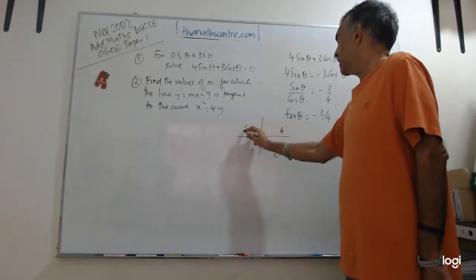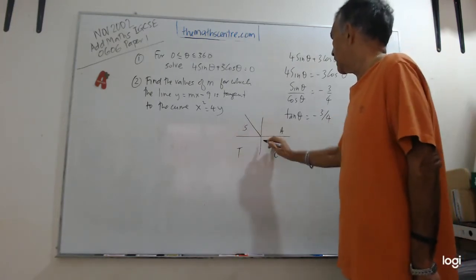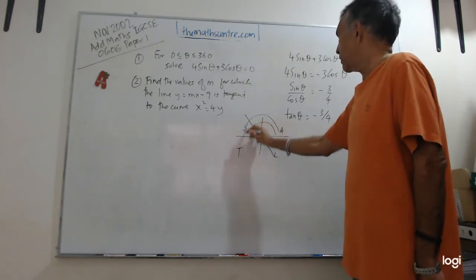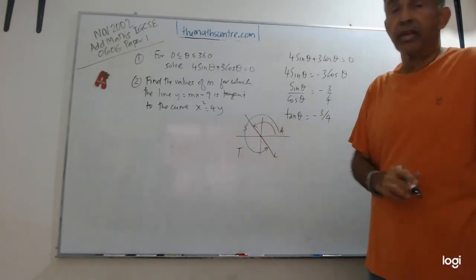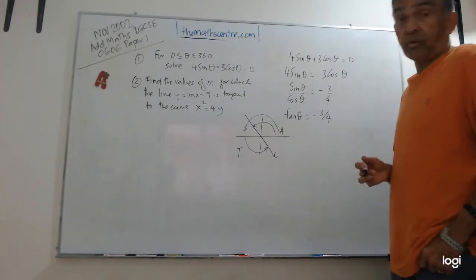C, A, S, T. Tangent is negative, so it must be here and here. So we're looking at these angles that we want. The first angle is in the second quadrant and then the other angle is in the fourth quadrant.